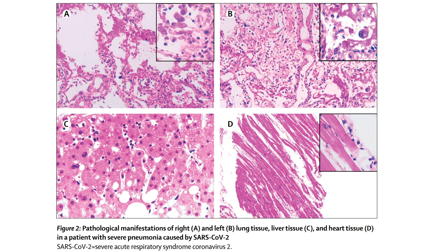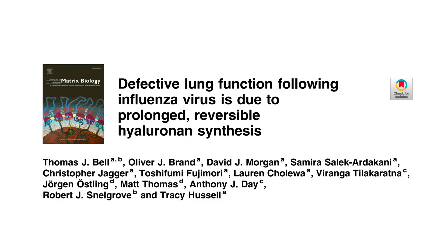Here we see the first pathological sample of COVID-19. Panel A shows the right lung and B the left lung — both showing ARDS changes, with B showing earlier changes. Notable is the increased lymphocytic infiltration. The same infiltration is seen in panels C (liver) and D (heart). Additionally, there is defective hyaluronan synthesis, resulting in increased hyaluronan accumulation, more water accumulation in the alveolus, and further flooding.